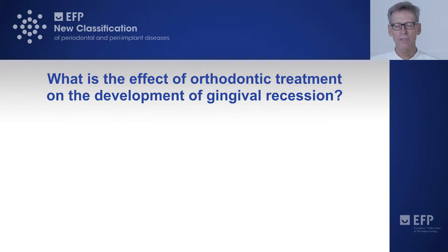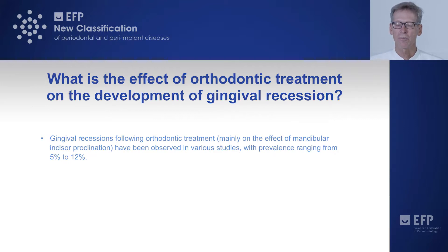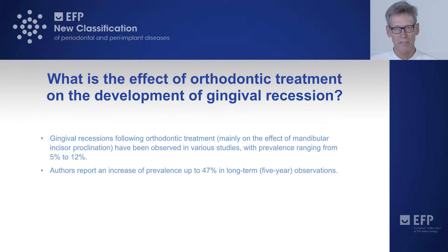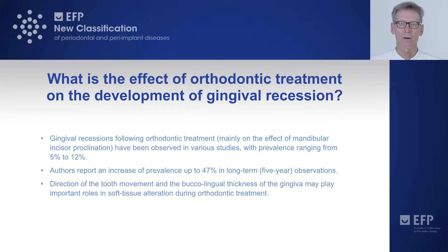What is the effect of orthodontic treatment on the development of gingival recession? It is known that gingival recessions following orthodontic therapy — mainly due to the effect of mandibular incisor proclination — have been observed in various studies, with a prevalence ranging from 5 to 12%. Others report an increase in prevalence up to 47% in long-term observations of 5 years or more. The direction of tooth movement and the buccolingual thickness of the gingiva may play important roles in soft tissue alteration during orthodontic treatment.